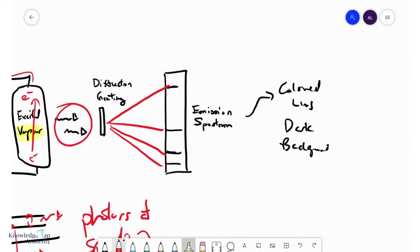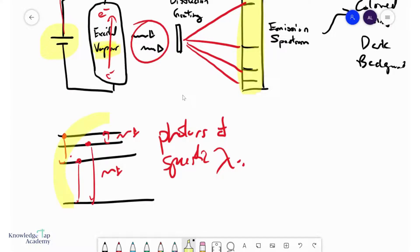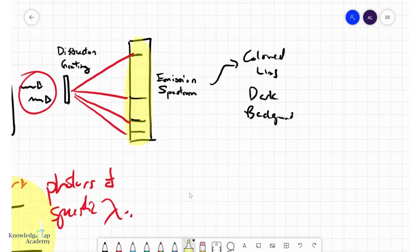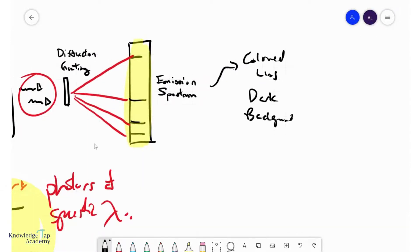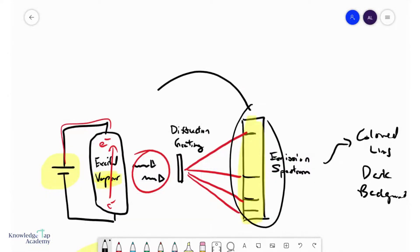This means that the series of lines that you obtain over here are going to be unique depending on the energy levels themselves, which of course every atom has a unique set of those. Therefore, by looking at the spectrum, you can identify what this vapor over here initially was by comparing it to a bunch of known spectrums.